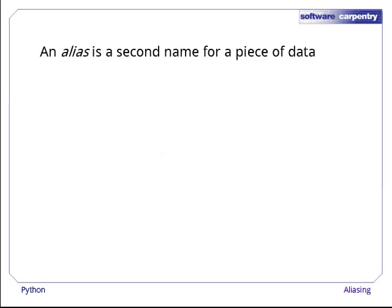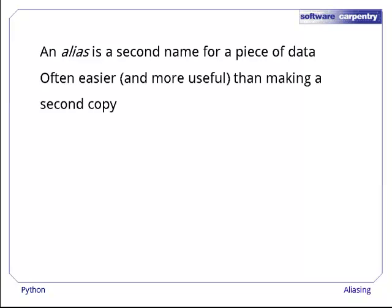An alias is a second name for a piece of data. Programmers create aliases because it's often easier or more useful to have a second way to refer to data than to copy it.